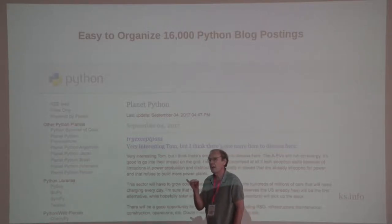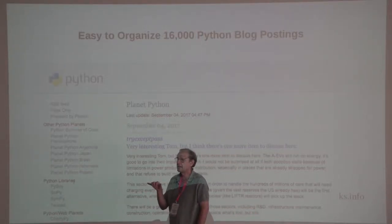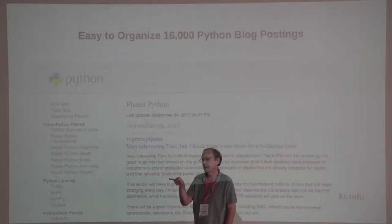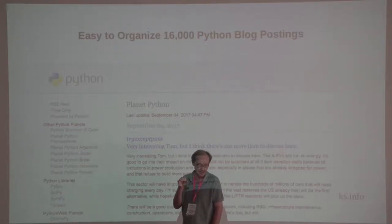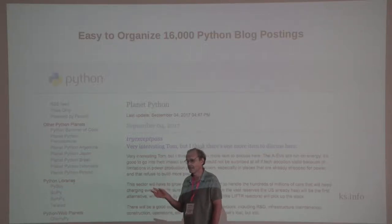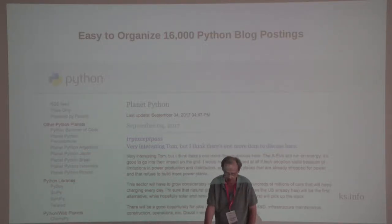So once you have a taxonomy that everybody agrees on, it's very easy for somebody to put the name of the taxonomy as the category. And once you can do that, you can import it all, structure it, and organize all these 16,000 blog postings according to a single tree, according to a single taxonomy.